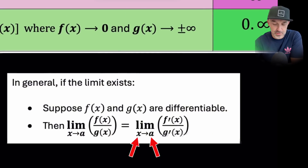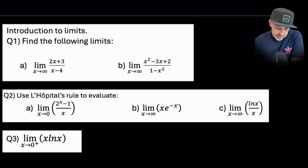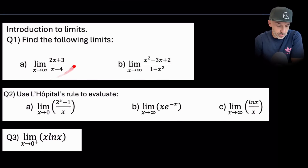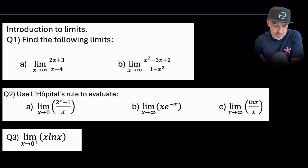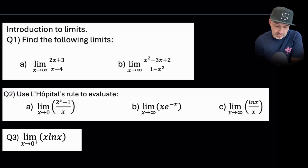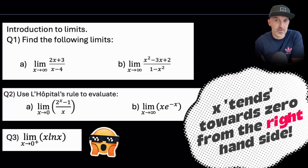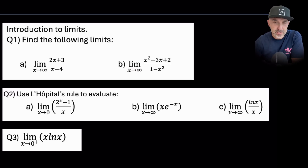That might sound a little confusing, so let's go through some examples that get progressively more difficult. In the first examples we'll substitute infinity in, but the value x tends to doesn't have to be infinity — it can be zero or any numerical value. In question 2 we'll substitute zero or infinity, and in question 3 — a tricky one — we tend to zero from the right-hand side, denoted by the little plus sign.